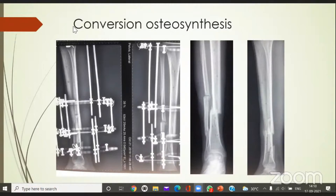Just look at the stability: you have distal rings — one in the distal — then you have the closer rings towards the fracture to give stability. Especially in cases of distal fractures, you might need to add a calcaneal fixation as well.